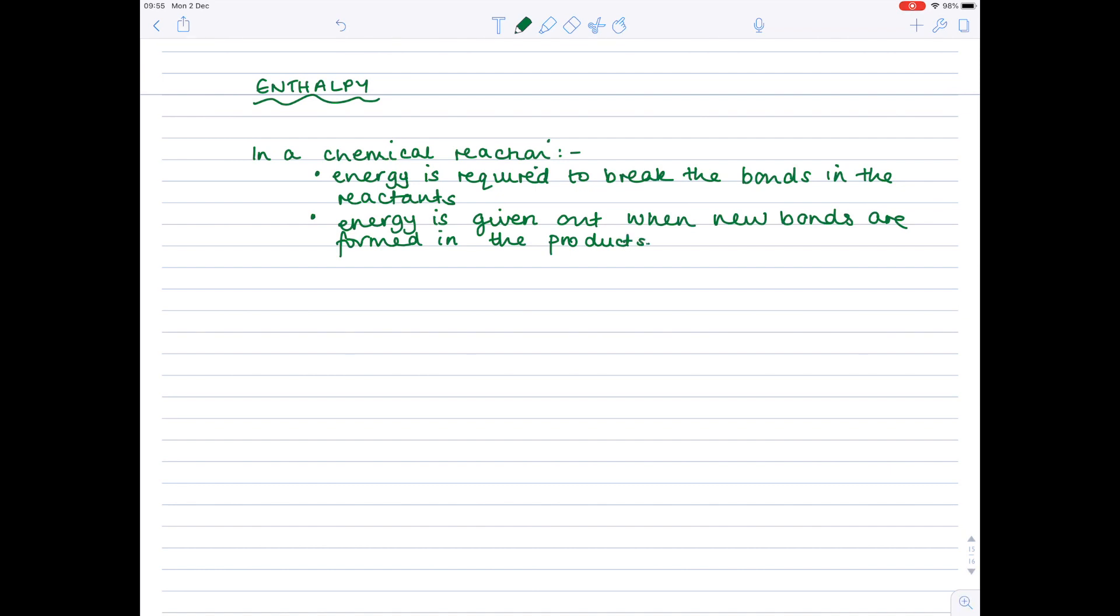And notice that in chemistry the most important type of energy is heat. So when we look at endothermic and exothermic reactions we're going to compare the energy needed to break the bonds in the reactants with the energy given out when new bonds are formed in the products and we're also going to talk about whether heat energy is given out or taken in.